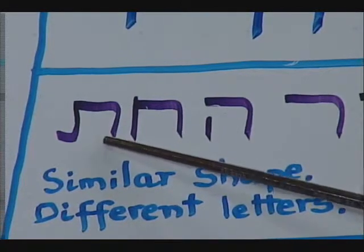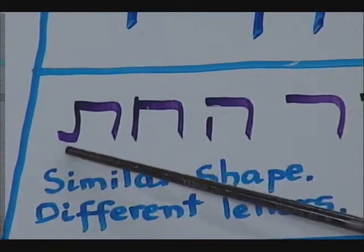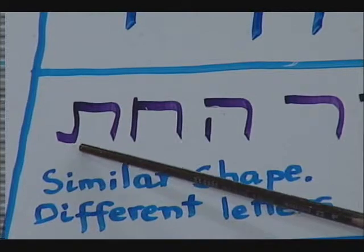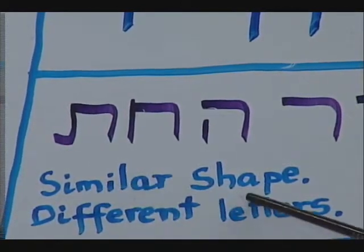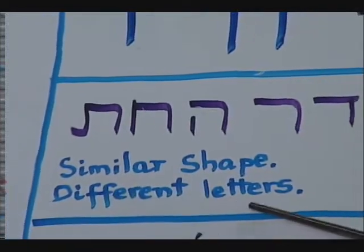And then the tav is very similar to the het, but it has a toe. Tav has a toe. So here I'm pointing to similar shape, different letters.